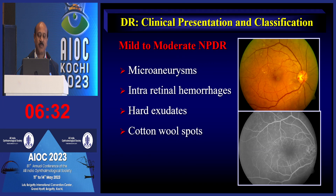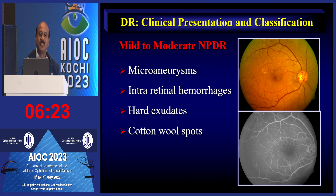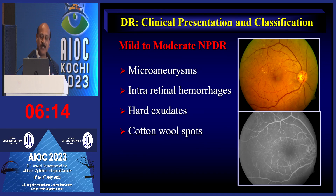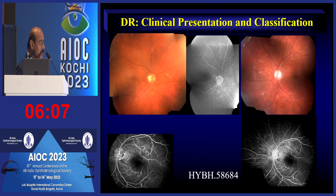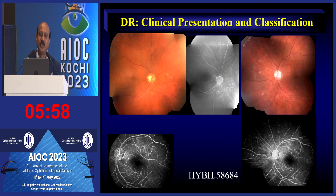Whether examining a color fundus photograph, angiogram, or red-free photograph, you must identify the signs and determine what stage of diabetic retinopathy the patient is at. Returning to the ETDRS classification, different stages of disease progression are defined — even the number of retinal hemorrhages is given specific importance: very mild shows hardly any hemorrhages, and moderate and severe stages are distinguished by increasing hemorrhage counts.